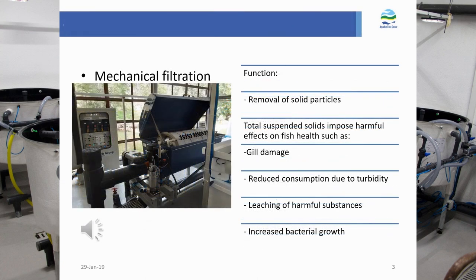The first step in water filtration is to remove solid particles. High levels of settled and suspended solids impose harmful effects on fish health, such as gill damage and turbidity, making feed less visible for the fish. Solids breaking down can leach harmful substances and provide habitat for harmful bacteria, which needs to be treated.